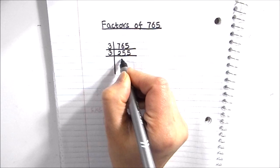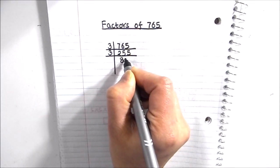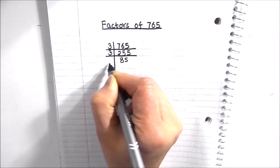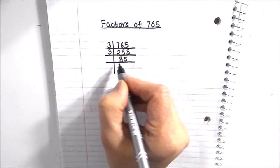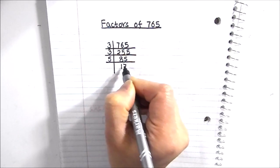3 times 8 is 24, 1 is remainder, this becomes 15, and 3 times 5 is 15. Now 85 is not fully divisible by 3, so we are going to use the next prime number, which is 5.